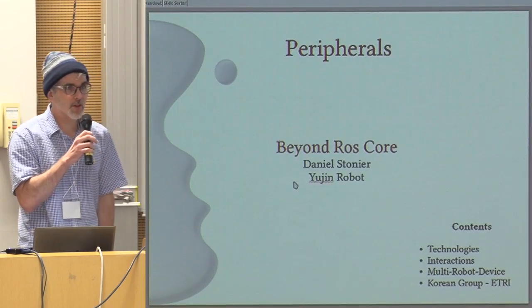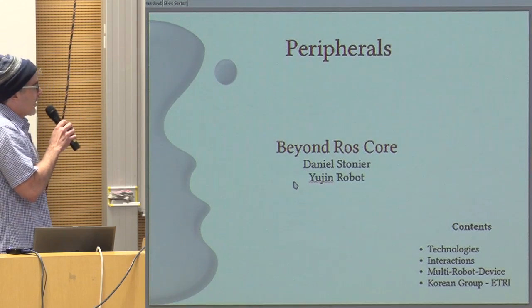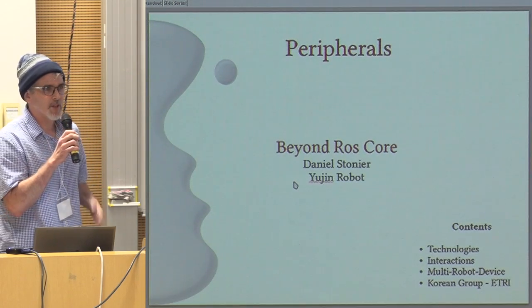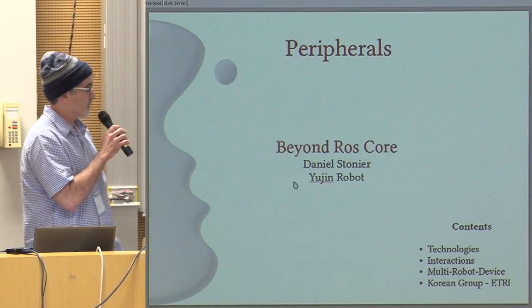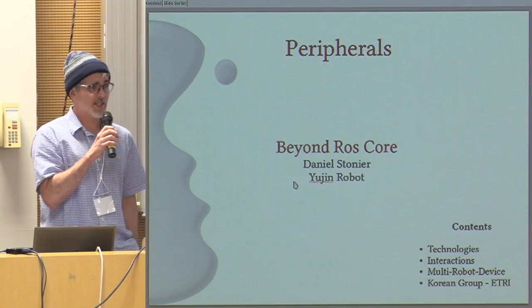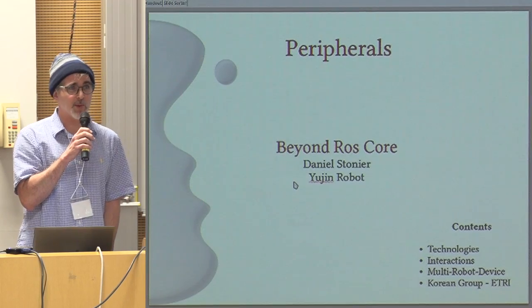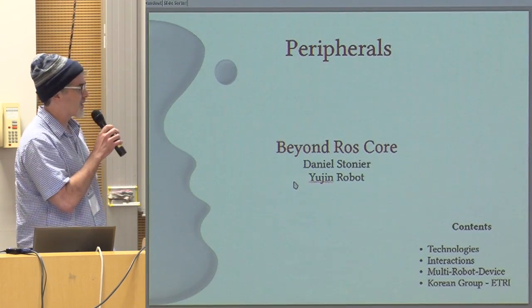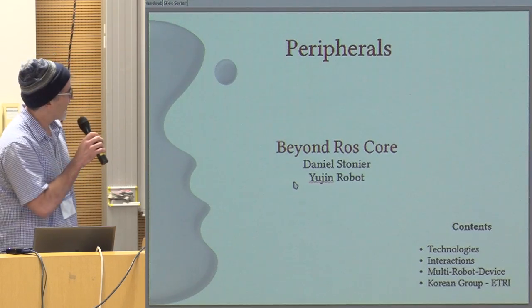Hi, I'm from Yujin Robot. I introduced myself earlier. My name is Daniel Stonia. I've been at Yujin for about six years now — it's only about four years longer than I planned, but things come up, like marriages and kids.